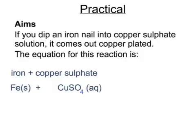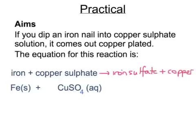A similar thing happens if you dip an iron nail into copper sulfate solution. The iron nail comes out copper plated. That's because the iron plus copper sulfate is making iron sulfate plus copper. The solid iron is added to the aqueous copper sulfate to make aqueous iron sulfate and solid copper.